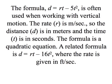The formula d equals rt minus 5t squared is often used when working with vertical motion. The rate r is meters per second, so the distance d is in meters, and the time t is in seconds. The formula is a quadratic equation. A related formula is d equals rt minus 16t squared, where the rate is given in feet per second.